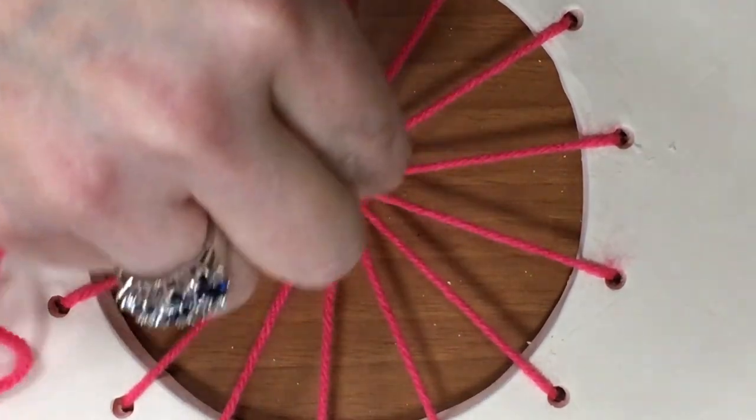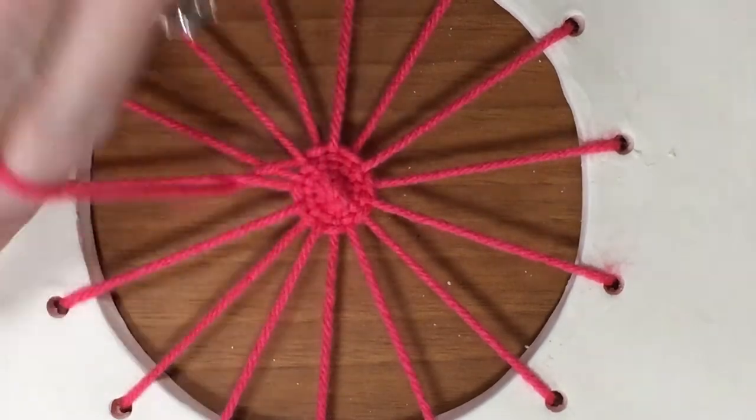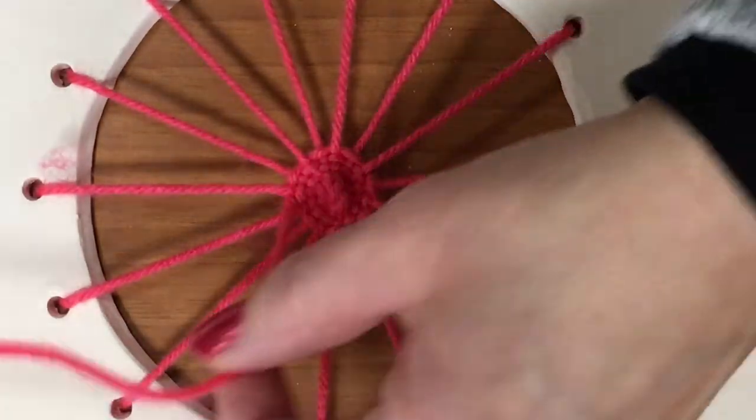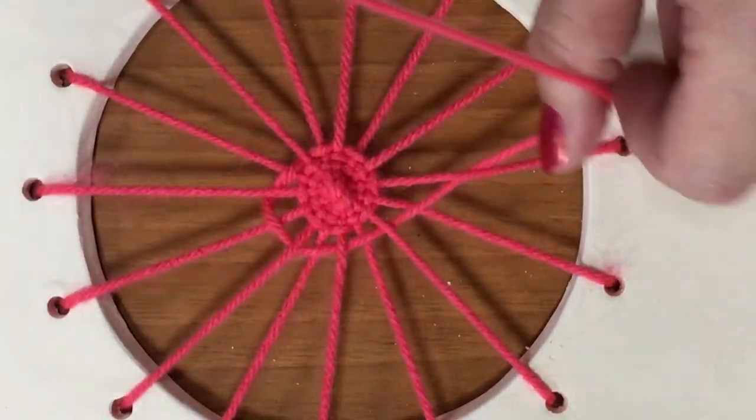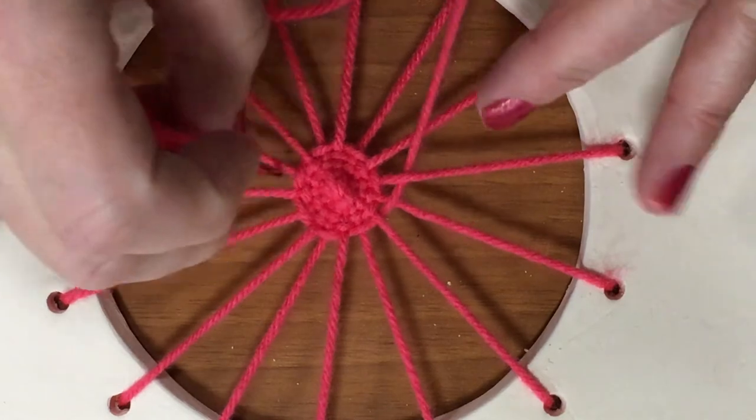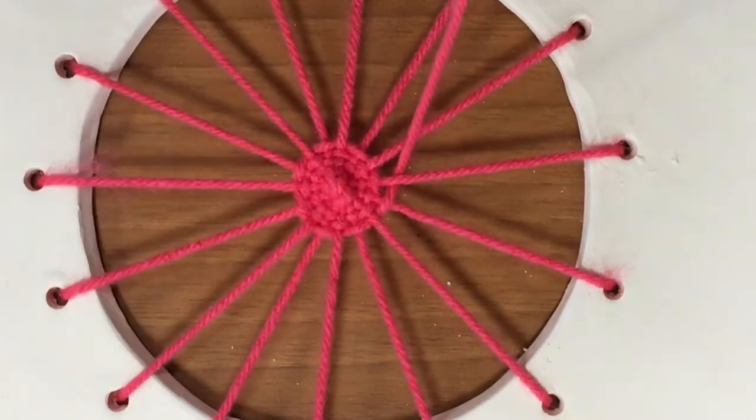When I'm using my needle like this, this is called beading the weft. Sometimes when you do larger weavings, you have an entire beader bar that you slide across. So that's good for right now.